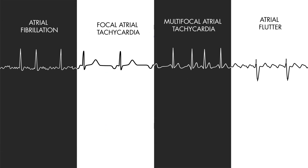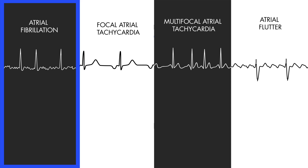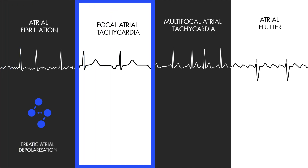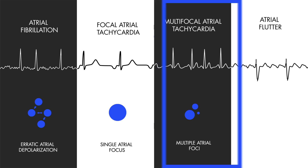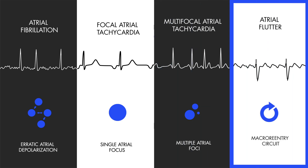These are the four general types of atrial tachyarrhythmias: atrial fibrillation results from erratic atrial depolarization from different ectopic sites occurring almost simultaneously; focal atrial tachycardias are the result of a single ectopic atrial focus; multifocal atrial tachycardias occur because of depolarization from multiple ectopic sites; and atrial flutter occurs because of ectopic macro reentry circuits.